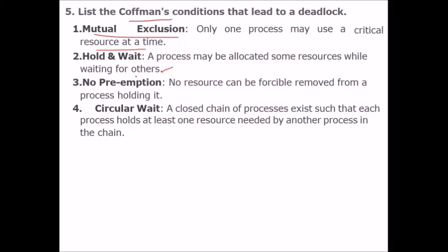No preemption means no resource can be forcefully removed from a process holding it. Circular wait means a closed chain of processes exists such that each process holds at least one resource needed by the next process in the chain. These are the four Coffman conditions that lead to deadlock.